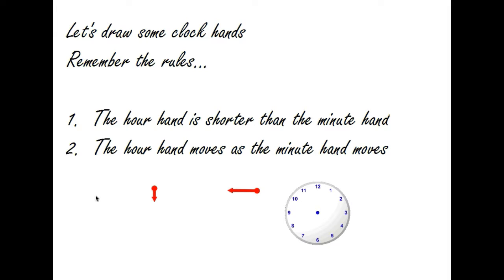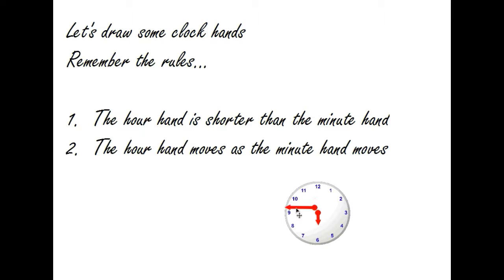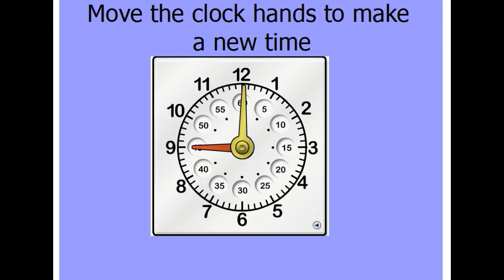Taking a look at the analog clock, it has many parts but two main parts. The first part is called the hour hand. The hour hand is usually shorter than the minute hand. The next part is called the minute hand, which is longer than the hour hand. The hour hand usually moves first, and then the minute hand moves as well.